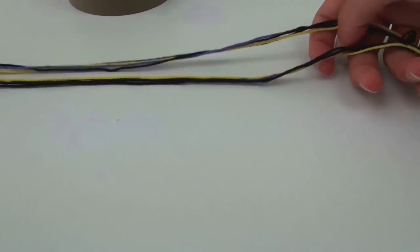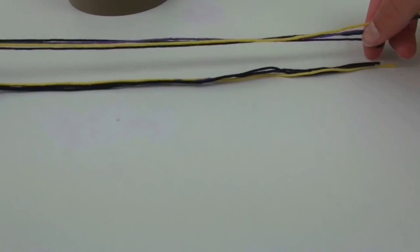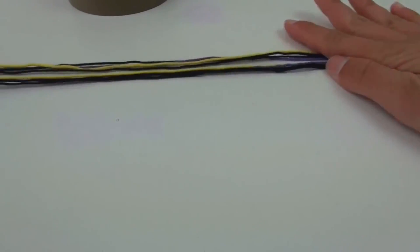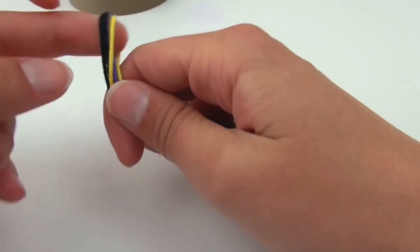All right, so they're 120 centimeters. Double them and make a knot in the middle with all of them.